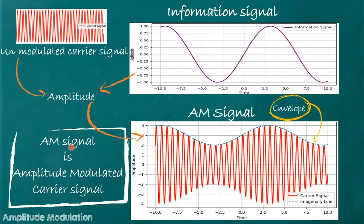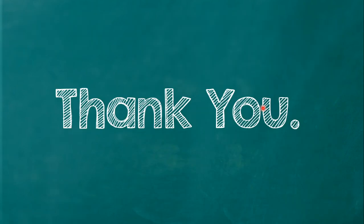The AM signal is nothing but the amplitude modulated carrier signal — we are changing the amplitude of the carrier according to the information signal. This carrier before modulation is called the unmodulated carrier, and the AM signal after modulation is called the amplitude modulated carrier signal.